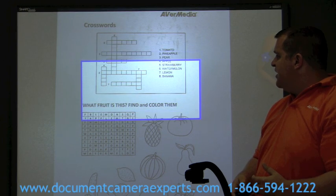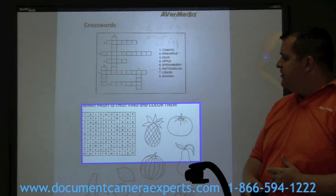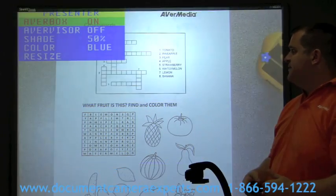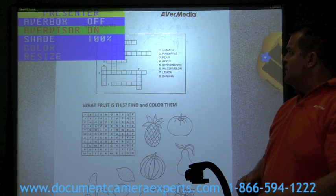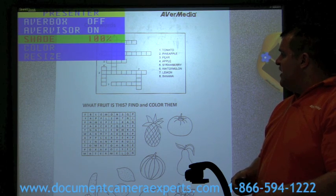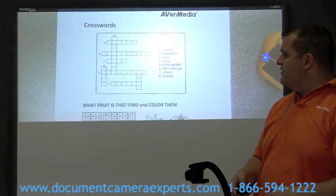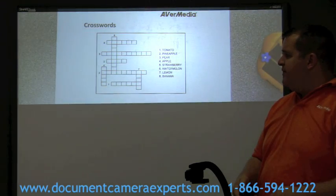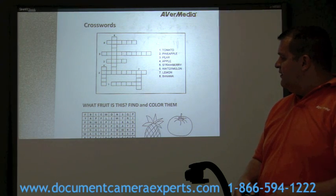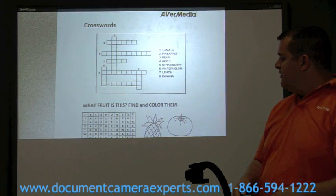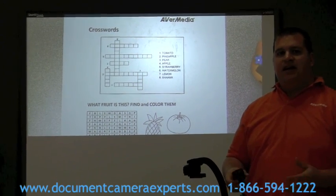I can show you the entire document, and then with that box I can zoom in and zoom out on what is in the box. Next let me show you AVerVision. AVerVision is a feature that allows you to create a visor with your live document. At 100% shade, 50%, you can pick whatever you like. You can go from top to bottom the entire document, and also right to left and left to right. AVerBox and AVerVision are presentation features you can use with the CP300 to enhance any classroom.